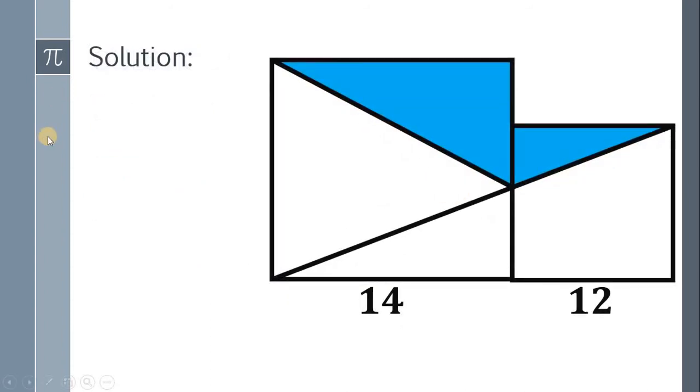There are a lot of ways to answer this kind of question. Maybe if you have a different solution to this problem, feel free to show your solution in the comment section down below. Okay, so one way to answer this problem is to get the length of this segment by using similar triangles, then get the area of the two squares, then subtract these two trapezoids, then we get the area of the shaded region.